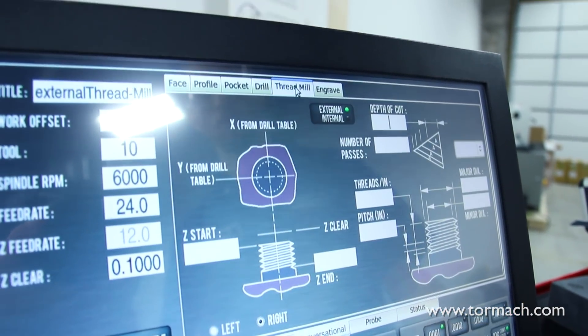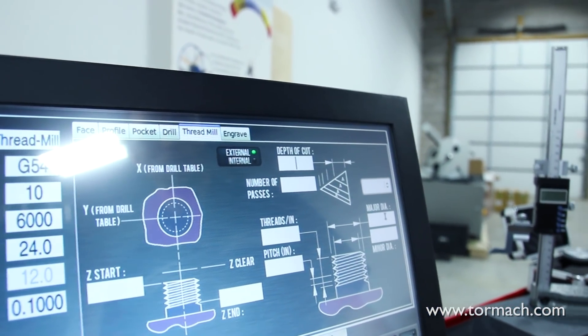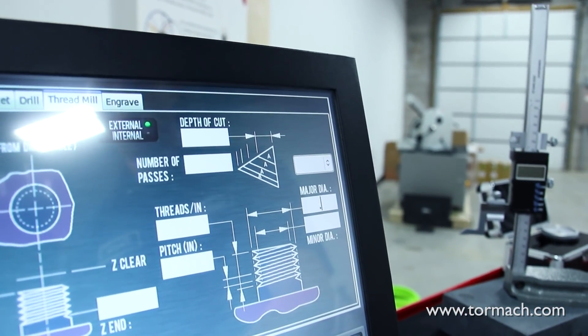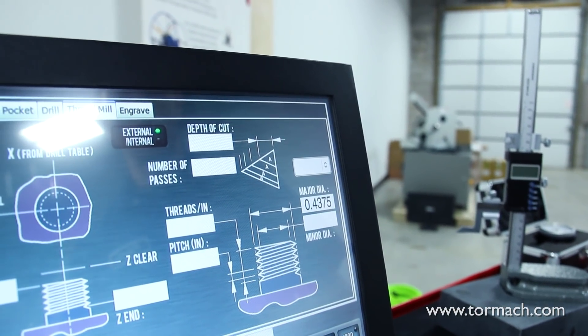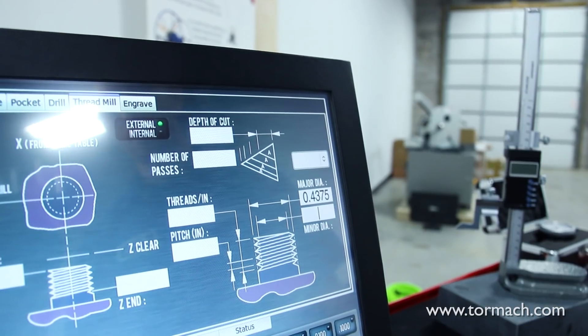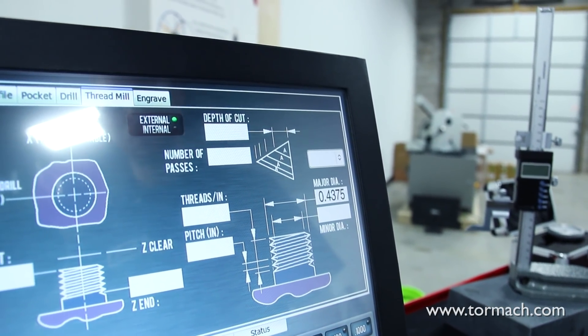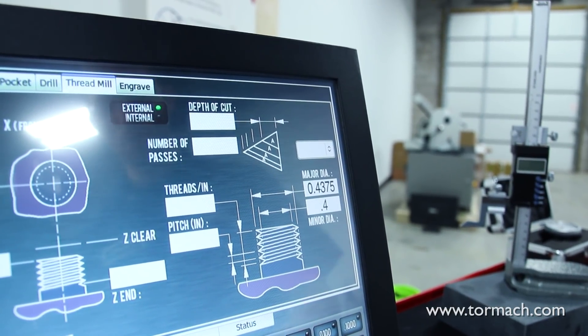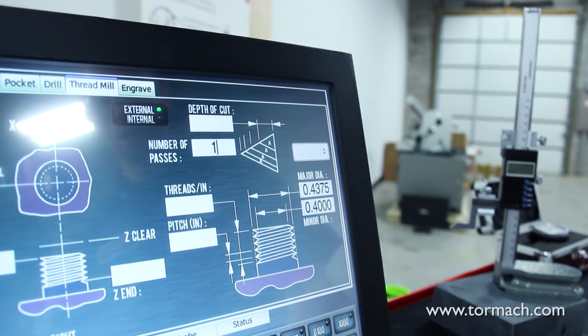We'll jump back to our thread milling page. My major diameter is going to be the same finished diameter that I want to use, so we'll use 0.4375 or 7/16ths. My minor diameter is not as important when you're using thread milling in this application, so I always just pick something a little smaller than my major.